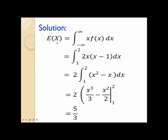First, we need to calculate the mean. Since X is a continuous random variable, its expected value — which is the mean — can be calculated using the formula: expected value of X is equal to the integral from negative infinity to positive infinity of X times F of X dx. The limits are from 1 to 2 because these are the possible values the random variable X could take. Simplifying further and evaluating at X equals 1 and X equals 2, we find that the mean is equal to five-thirds.